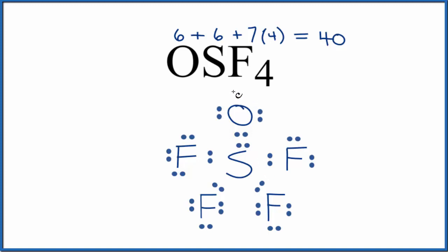The difference is, the formal charges now, for the oxygen, that's zero, and for the sulfur, the formal charge is zero as well. Same for all the fluorines. So by making a double bond, we have more favorable formal charges. So this means that this is the most likely or best Lewis structure for OSF4 with the double bond.